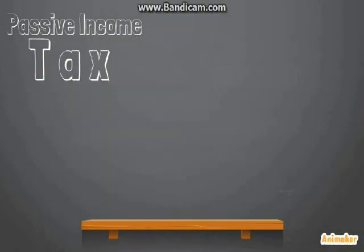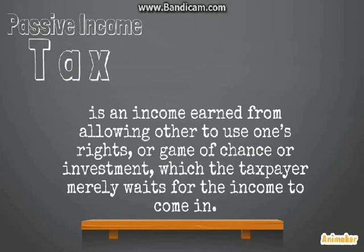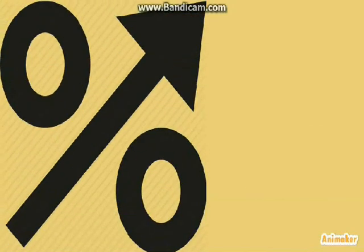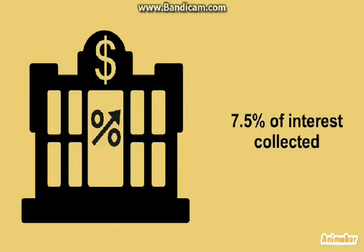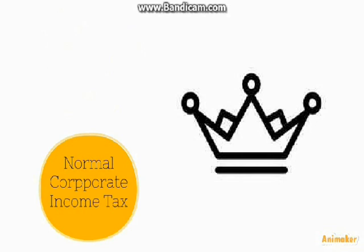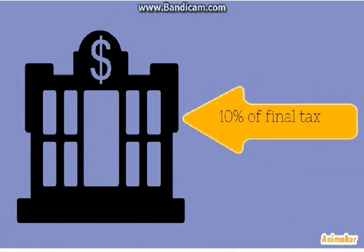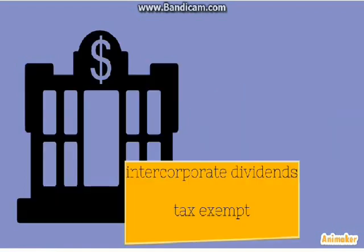Passive income is income earned from allowing others to use one's rights, games of chance, or investments, where the taxpayer merely waits for the income. Passive income from interest of a depository bank is taxed at 7.5% for domestic and resident foreign corporations. For royalties and interest on currency bank deposits, domestic and resident foreign corporations are taxed at 20%, while non-resident foreign corporations are taxed at normal corporate income tax. Income of domestic banks derived from foreign currency transactions is subject to a final tax of 10%, including interest from foreign currency loans. Income from intercorporate dividends is exempted from tax.